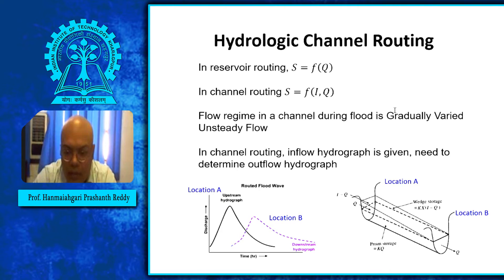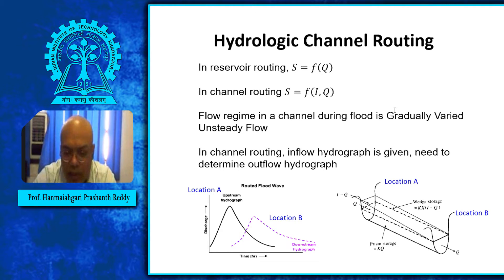Steady flow means that at any fixed measuring location in space, if the velocity is not changing with time — that is, ∂v/∂t equals zero — then we can say it is steady flow. The velocity of flow does not change with time at a fixed measuring location. Whereas in unsteady flow, velocity changes with time.